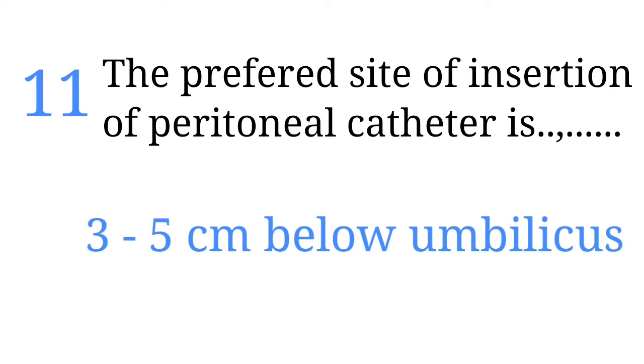The preferred site of insertion of the peritoneal catheter is 3 to 5 cm below the umbilicus.